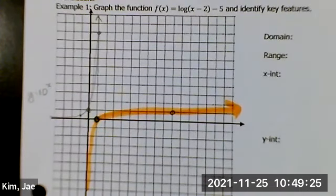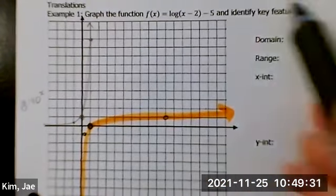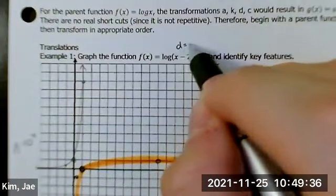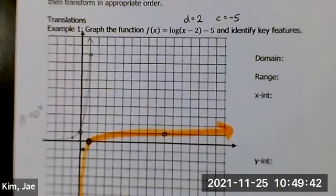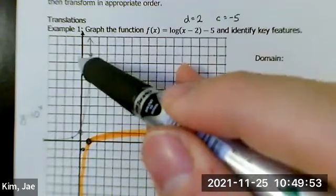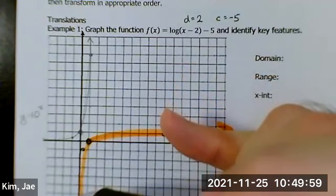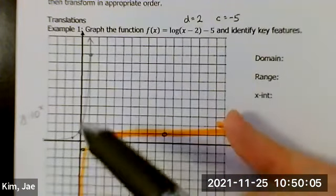These three points are going to be transformed with a d value of 2 and a c value of negative 5. So two to the right, five down. If you want extra help, consider how there is a vertical asymptote right at the y-axis.